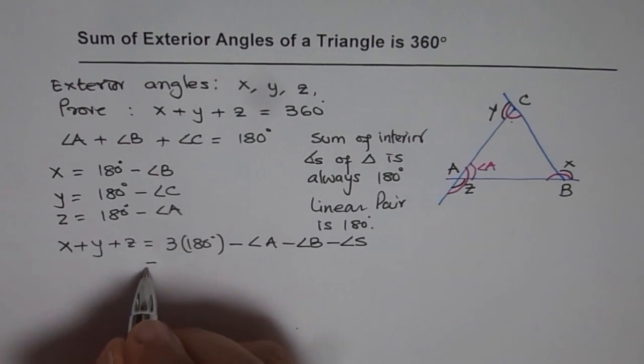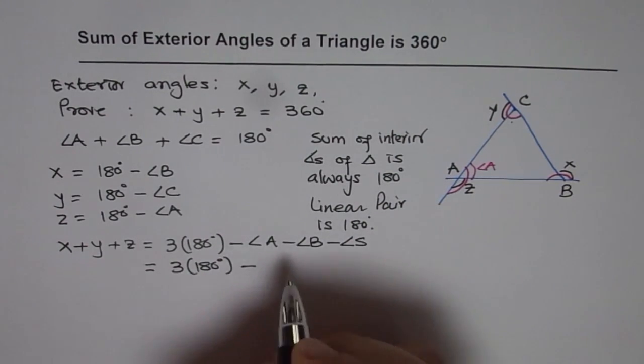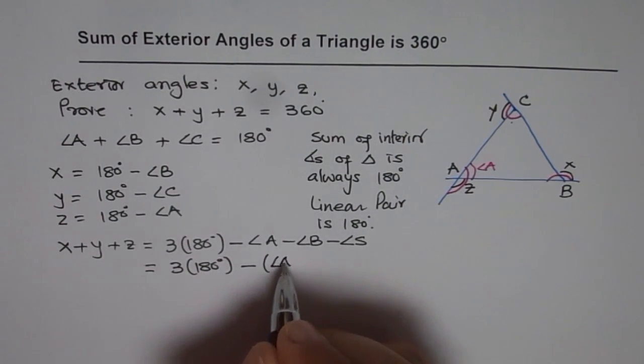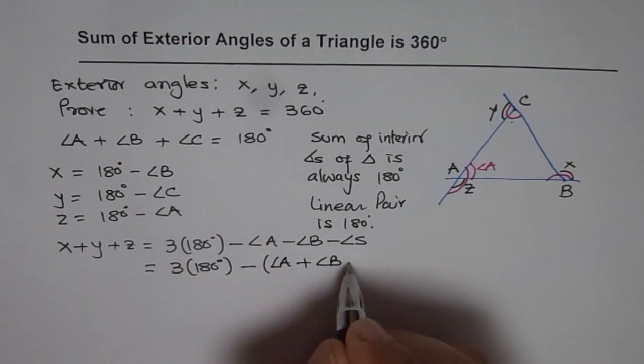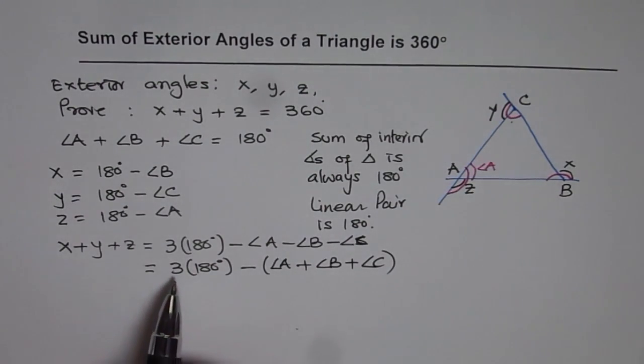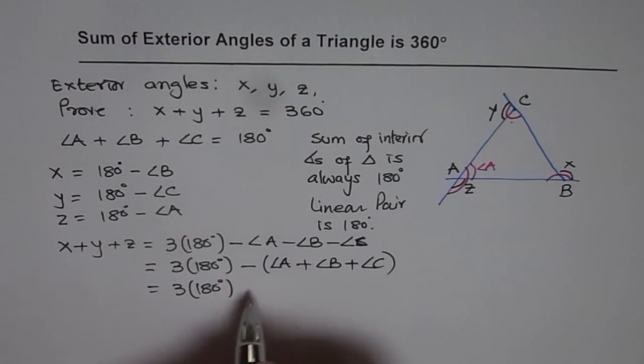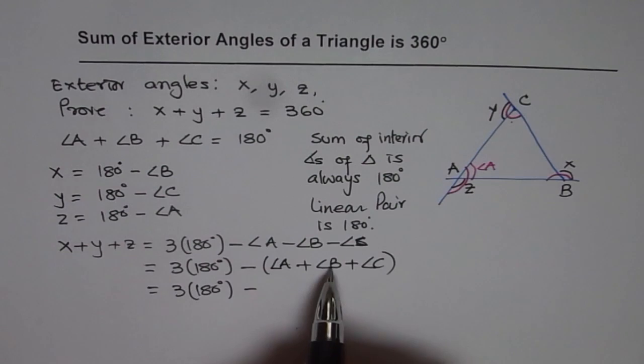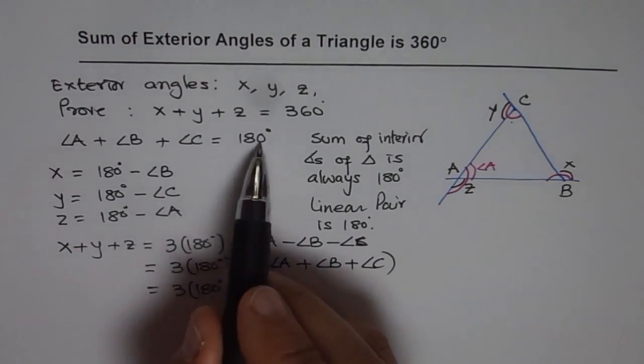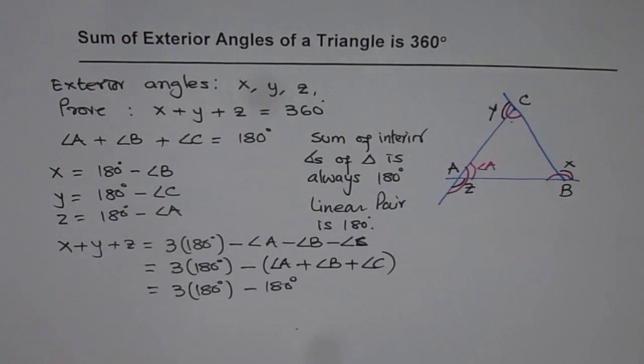3 times 180 degrees minus angle A minus angle B minus angle C. Which gives us 3 times 180 degrees minus angle A plus angle B plus angle C. That could be written as 3 times 180 degrees minus what is angle A plus B plus C? It is 180 degrees. So minus 180 degrees.